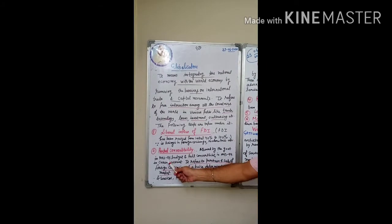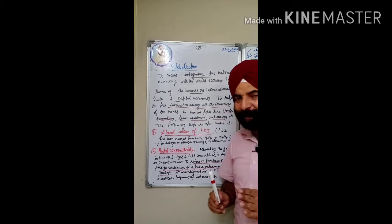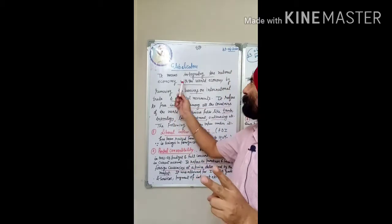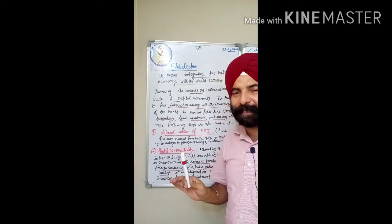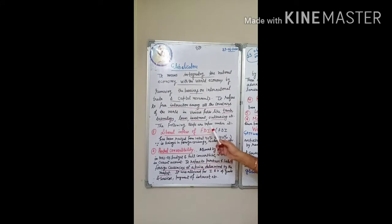Partial convertibility in 93 budget and full convertibility in 93-94 budget. So two reforms we have read. Meaning clear on globalization. First, liberal inflow of the FDI. Second is partial convertibility.